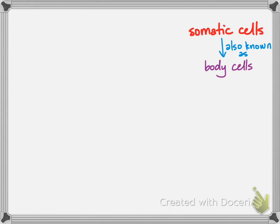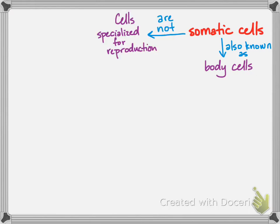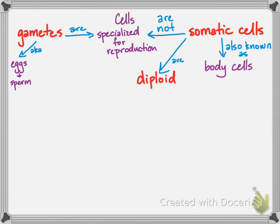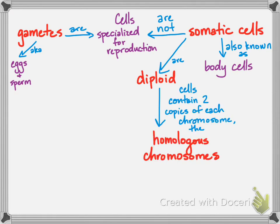Our somatic, or body cells, are not specialized for reproduction. The gametes are the specialized reproductive cells, also known as eggs and sperm. The major difference in these cells is whether they are diploid or haploid. Somatic cells contain two copies of each chromosome, so they are diploid. The two copies are called homologous chromosomes because they contain the same type of gene, but not necessarily the same variant — such as a gene for blue eyes and a gene for brown eyes. These chromosomes are sometimes called homologs, especially during meiosis when they are replicated and look like those classic X forms.